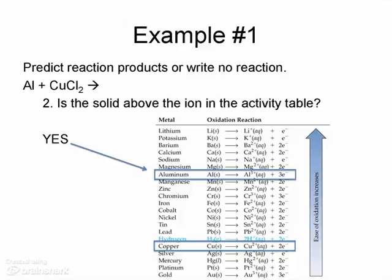Now let's look at step two. Is the solid above the ion in the activity table? So our solid here is aluminum metal, and our ion is copper 2+. So yes, aluminum is above copper in the activity table. That means that the reaction can occur.